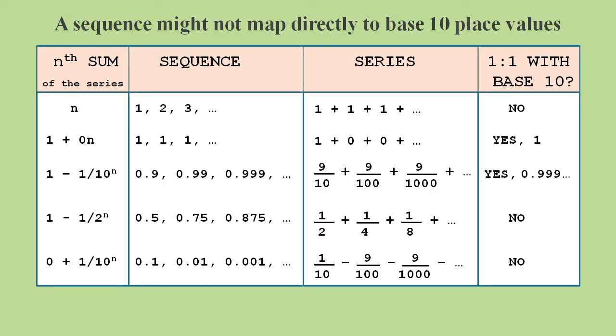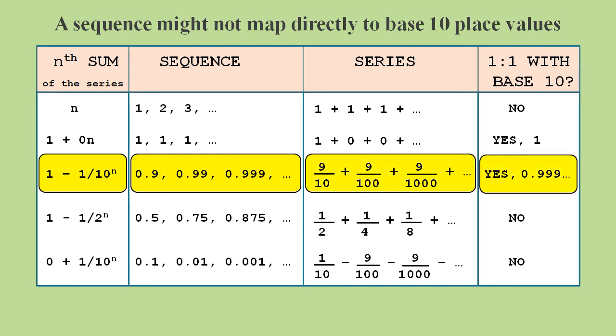We can construct lots of different sequences, but only a few of them will map neatly onto the place value system of base 10 decimals. Each term in the sequence 0.9, 0.99, and so on, is the nth sum of the corresponding series. And since it maps neatly to our decimal system, we can write it in a way that looks like a decimal.